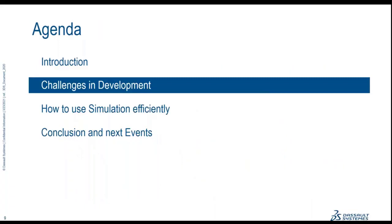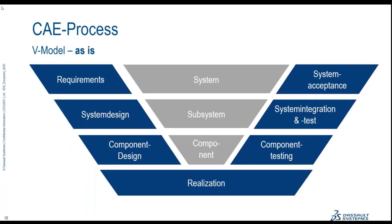Now let's address the challenges of integrating simulation into the development process. If simulation is that beneficial, why aren't we doing it all the time for everything? When looking at a simple V-model representation, we start from requirements at the top left, go through system design and pre-development, down to component design, then give everything to the CAD engineer for detailed design. What we usually see is that instead of doing a physical prototype, the design is passed to the simulation department. This causes issues: many details the design engineer added are not needed for simulation, and the simulation engineer usually has to clean them up and reduce the level of detail, causing really long turnaround times.